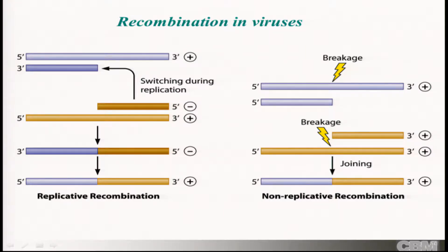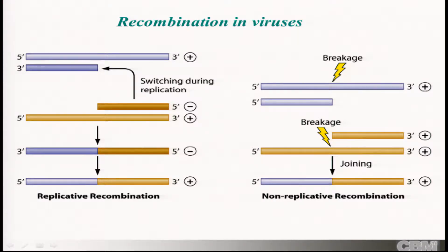Recombination in viruses has two major mechanisms. The most common is replicative recombination: when an RNA template — say a plus strand — is being copied into the complementary minus strand, the polymerase can jump templates and continue copying a different parental genome, producing a mosaic recombinant. This happens in several, probably most, viruses. Less widespread is non-replicative recombination, which doesn't require the viral genome to be replicating; broken RNA can be joined by enzymatic activity to yield the same mosaic result.